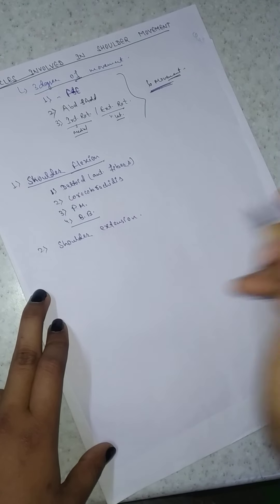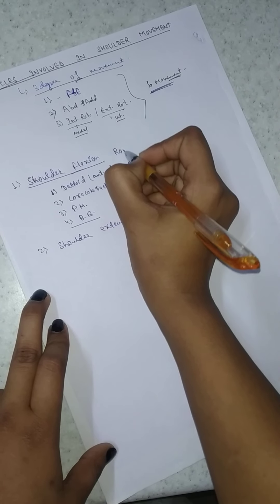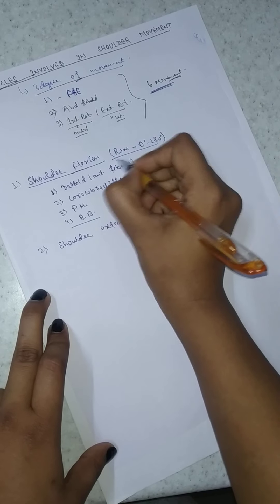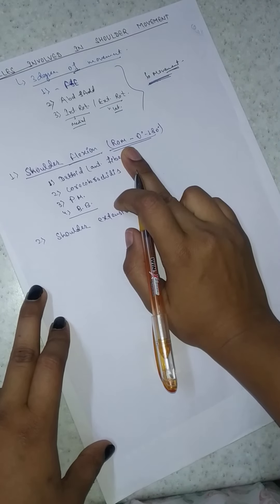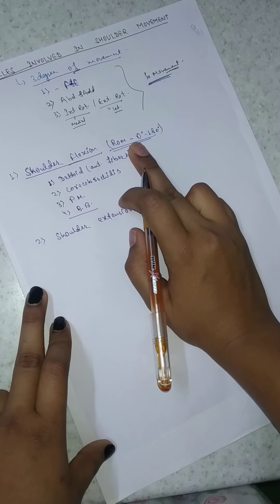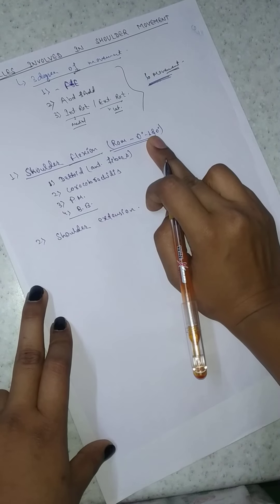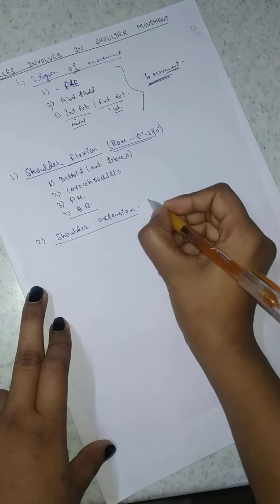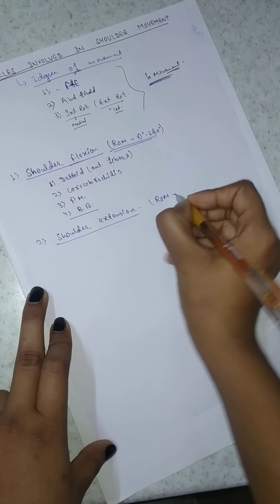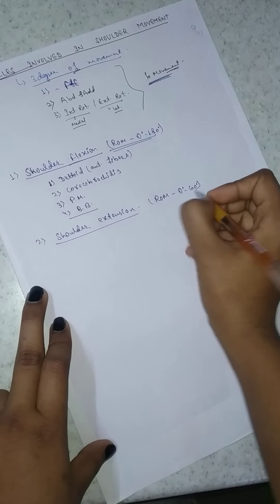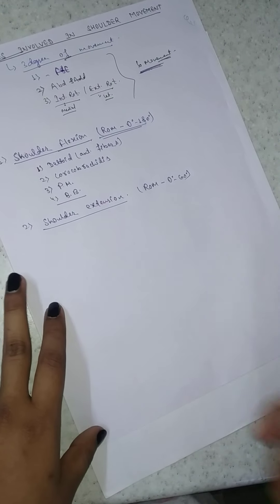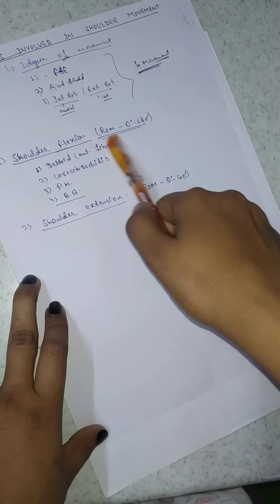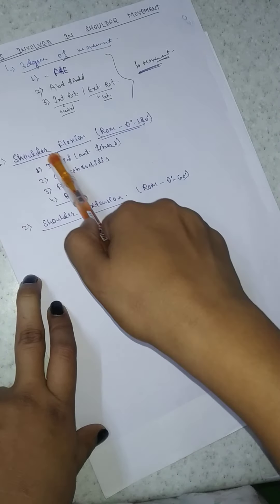Now we are going to study about shoulder extension. The range of motion for shoulder flexion is 0 degrees to 180 degrees — it starts from 0 degrees and ends at 180 degrees. For shoulder extension, we cannot move as far back, so the range of motion for extension is 0 to 60 degrees, compared to 0 to 180 degrees for shoulder flexion.